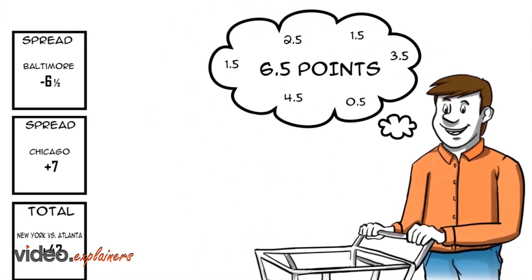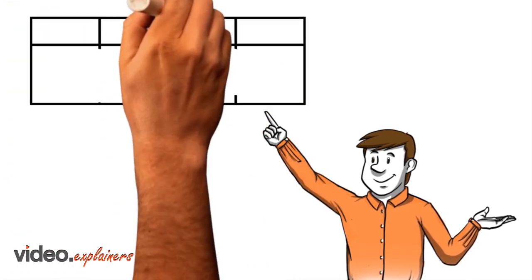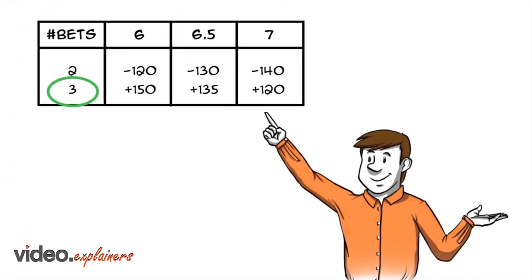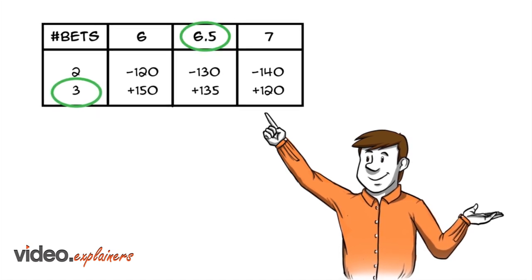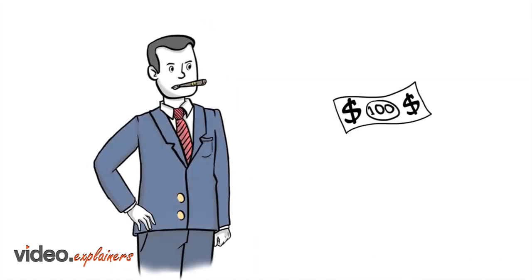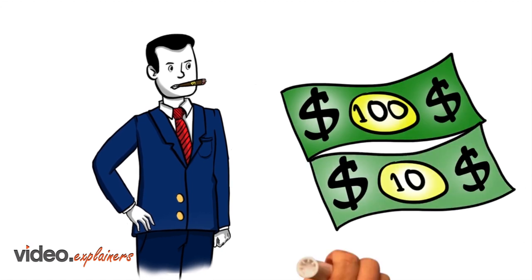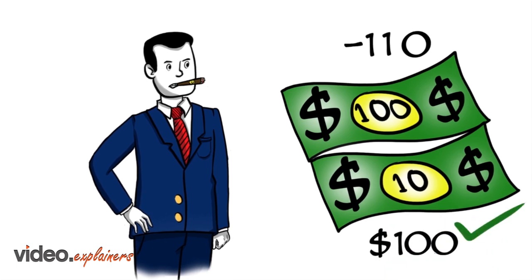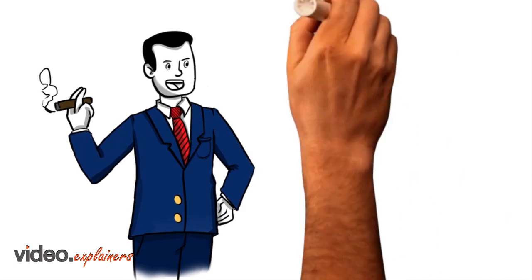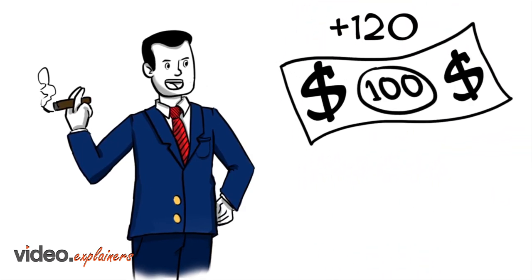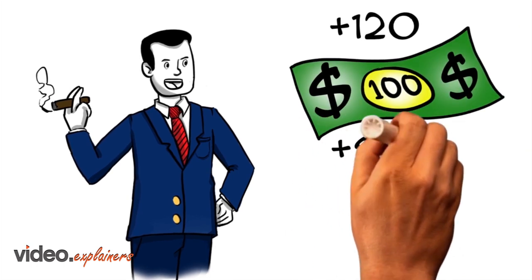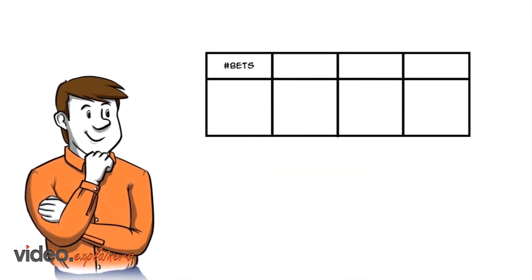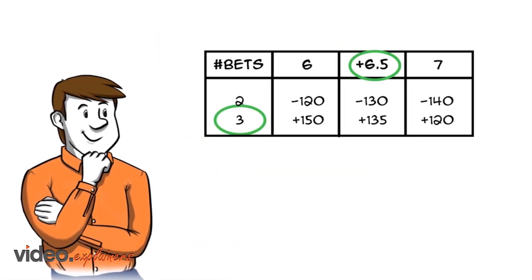Let's select 6.5 points. Match the number of bets to the desired number of points. Note the money line odds: a minus sign indicates how much you risk to win $100, a plus sign indicates how much you win if you risk $100. Our three-selection example pays $135 for risking $100.